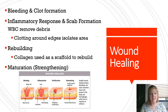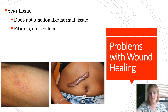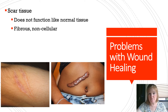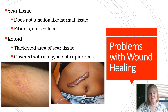Maturation is the final step — strengthening and returning the tissue to its original functioning. Some problems with wound healing include scar tissue, which doesn't function like normal tissue. It's fibrous and non-cellular. If cardiac muscle tissue is replaced with scar tissue, it doesn't behave like cardiac muscle, which can cause problems with heart function. A keloid is a thickened area of scar tissue, often covered with a shiny, smooth epidermis. Essentially the body overproduced collagen — it overshot the healing process.